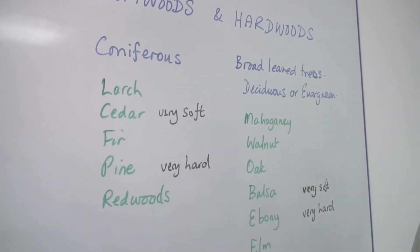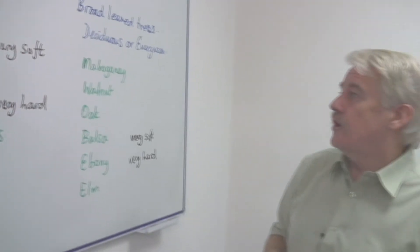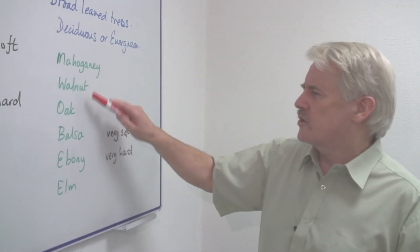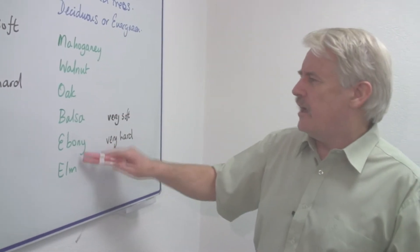But basically they divide into these two groups and the hardwood names that you will recognize are things like mahogany, walnut, oak, ebony, elm, and balsa.